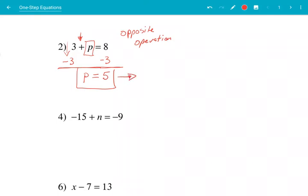P equals five. And we can plug it back in. Three plus, instead of p, we have five equals eight. Is that correct? Yes. Eight equals eight. That's how we solve a one-step equation.